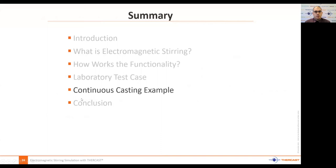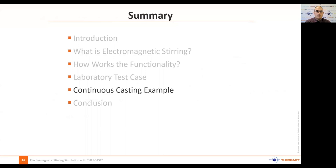Now I'm going to show an example of continuous casting with electromagnetic stirring. I started from the tutorial available in the Turcast release and modified it for this presentation. I added a nozzle to create a different, characteristic flow where fluid comes in and hits the walls of the mold. Adding the stirrer produces rotational flow, so the full geometry must be represented without symmetry. Since the stirrer is near the nozzle, I've chosen to stop computing when the metal reaches the first rolls.